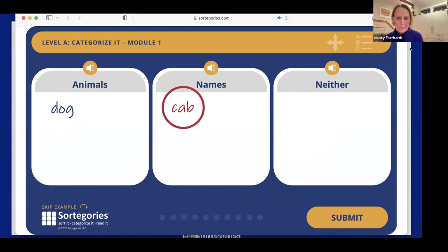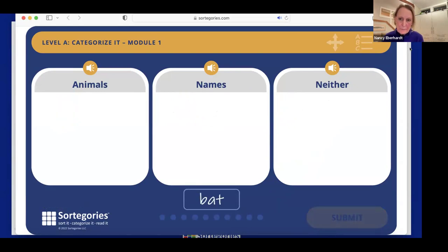For example, drag the first word to the correct category and drop it. Now do the same for the second word. At any time, you can move words from one category to another. Repeat until no more words appear. Click submit to check your answer. Words in the correct category will appear in blue. Words in red are not in the correct category. Don't worry, you'll have a second try to get as many words correct as you can. Now it's your turn. Put each word in the correct category.